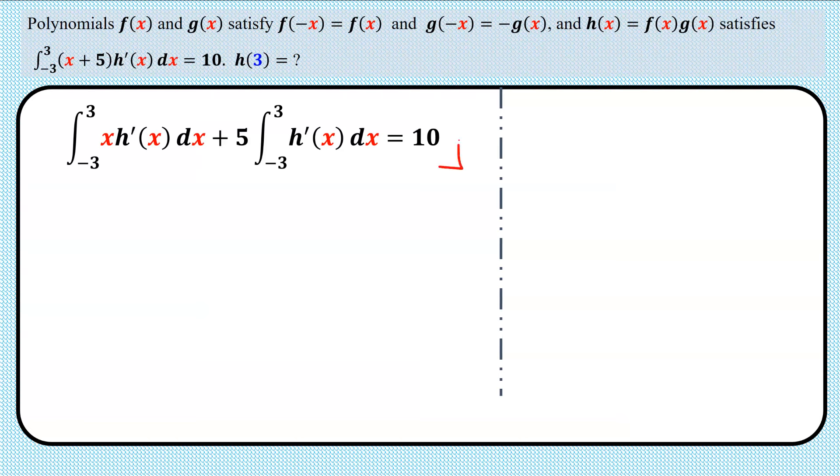So we're back to here. Since we know that xh'(x) is an odd function, this integral simply gives 0. And since h'(x) is an even function, we can write this part as 10 times integral of h'(x) dx from 0 to 3, and this equals 10. So we cancel out 10.